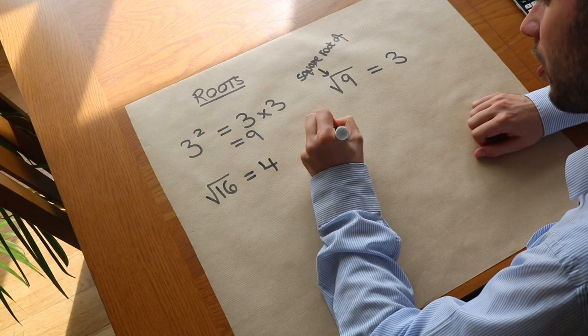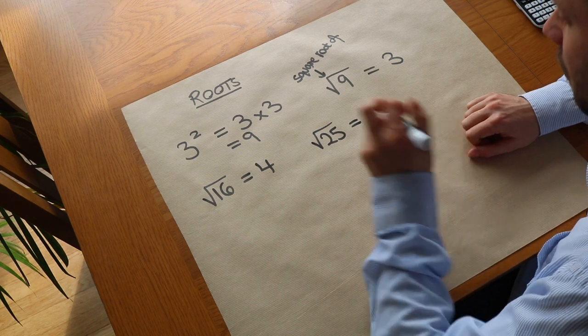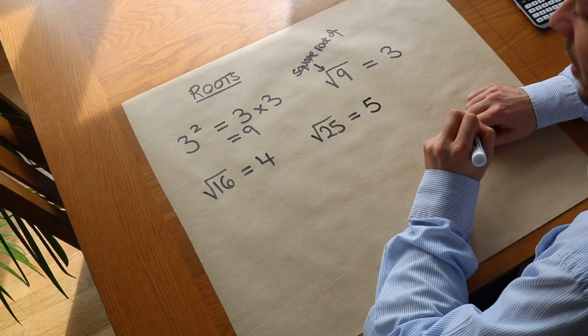What about the square root of 25? What number multiplied by itself gives you 25? Well it's 5 because 5 squared equals 25.